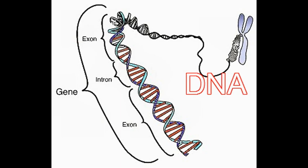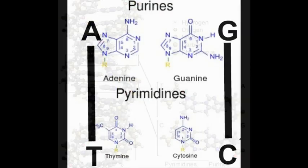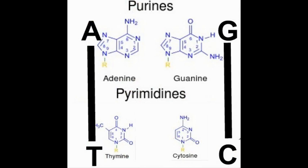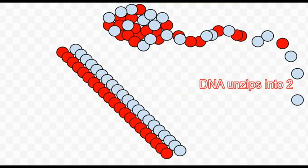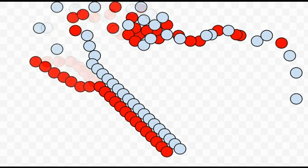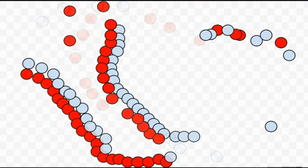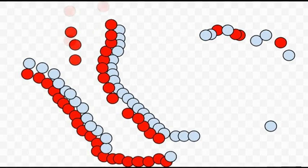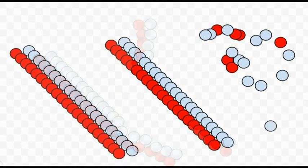DNA is made from two strands of four molecules: A, T, C, and G. Because A always bonds with T and C always bonds with G, DNA can replicate by unzipping into two strands. Once unzipped, opposing negative strands are formed from the available A, T, C, and G molecules in the area. In this way, a double strand can replicate into two identical double strands.